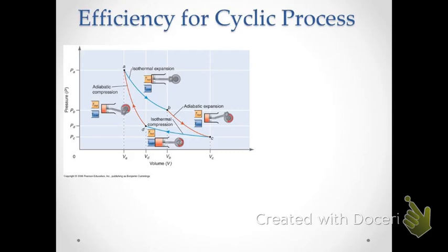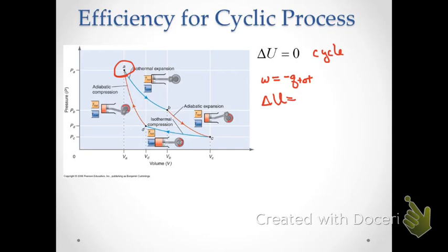Let's examine the efficiency more closely. We have a cyclic process, so since it starts at point A and returns to point A, delta U for the entire cycle equals zero. That means W equals negative Q total, because delta U equals W plus Q total.